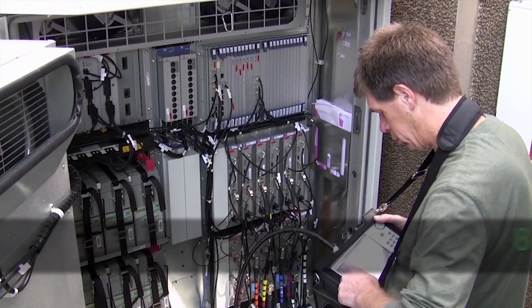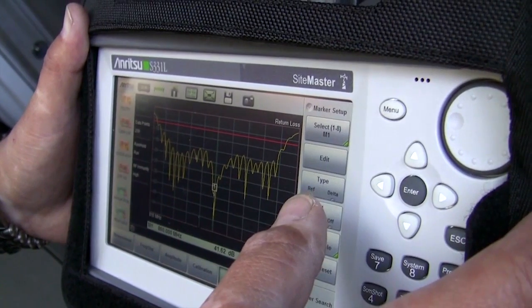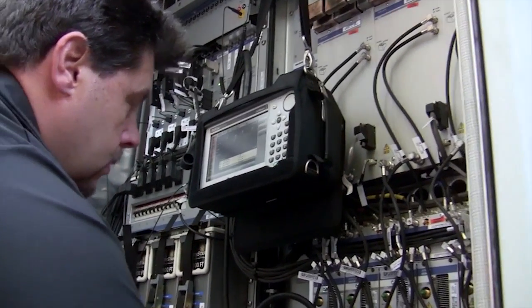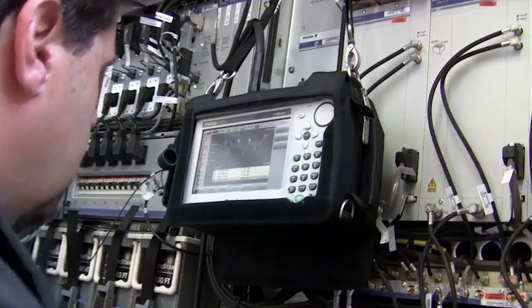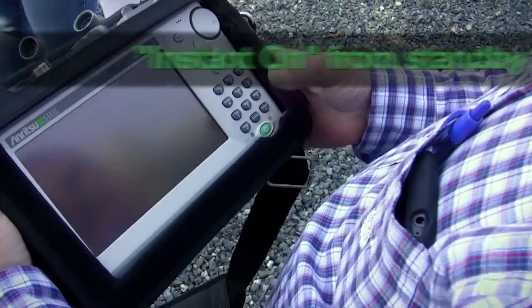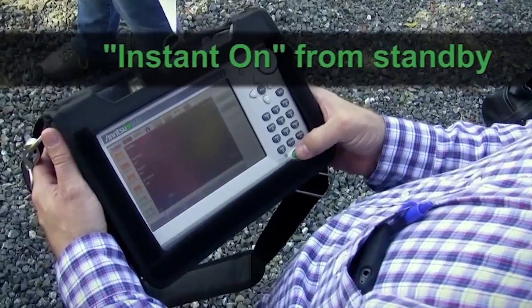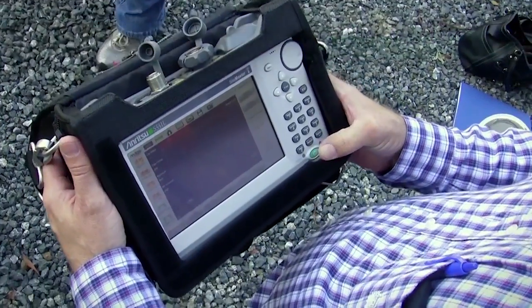And not only does the new SightMaster S331L run longer, it also has a lot more internal memory so you don't have to worry about running out of space for all your measurements. Plus, the instant on from standby mode keeps you moving at your pace. No more waiting for boot up.